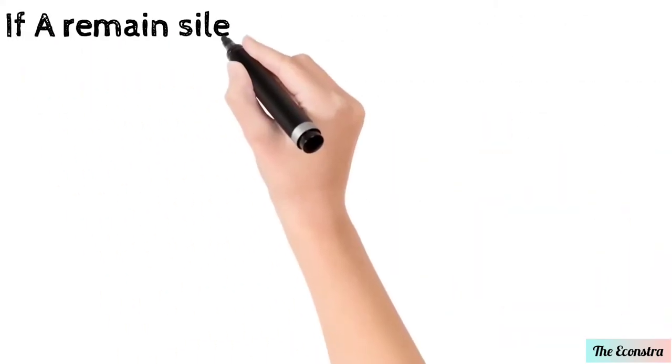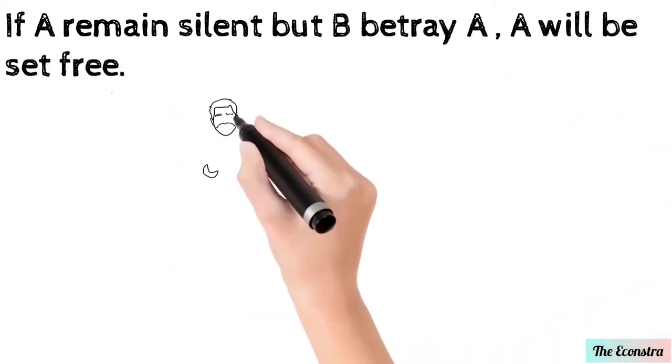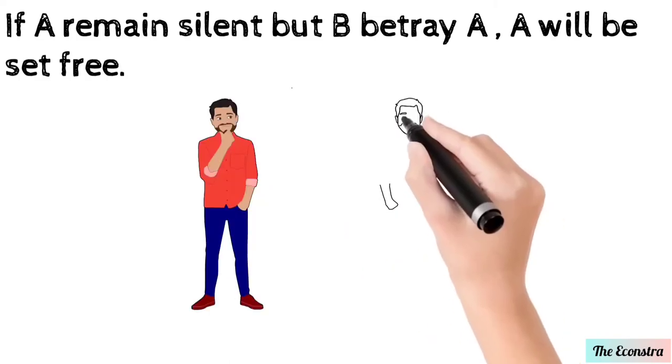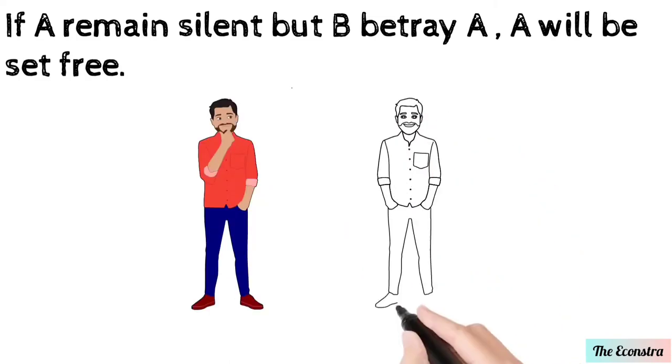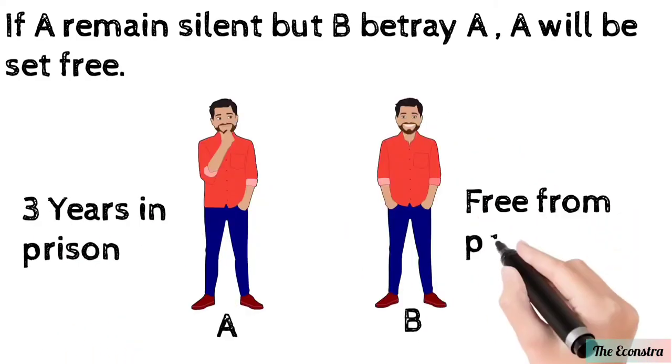If A remains silent and B betrays A, A will serve three years in prison and B will be free.